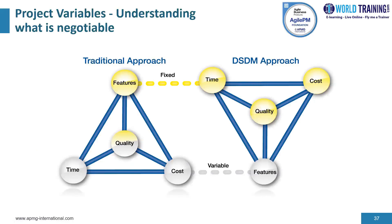Now we have four variables to consider — there are others, but these are the most common ones. In the traditional approach, there is an unrealistic desire to fix requirements, i.e., features. This is a major cause of project failures, particularly large government ones. Time and cost are also presumed to be fixed very early on, and plans are written on that basis, but fixed requirements result in time and cost overruns.